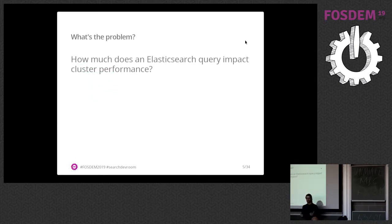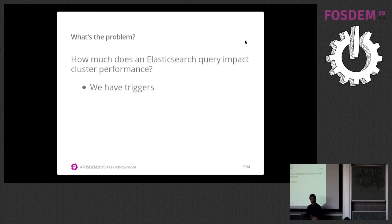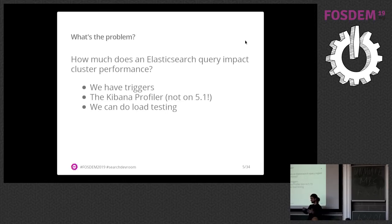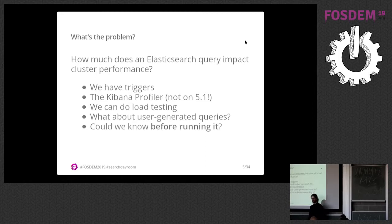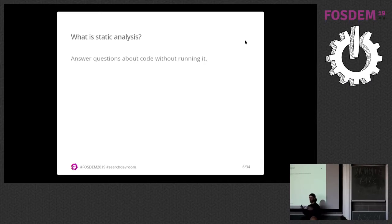What ways do we have currently to assess query impact on an Elasticsearch cluster? We have circuit breakers that Elasticsearch provides — cutting mechanisms so that if something takes too long, it breaks. There's the Kibana profiler, though when we started it wasn't available on 5.1 yet, and we can do load testing of queries. But what about queries that are dynamic, that you can't know ahead of time? The cluster was also shared by multiple tenants and we didn't want one user's queries to impact others' performance.